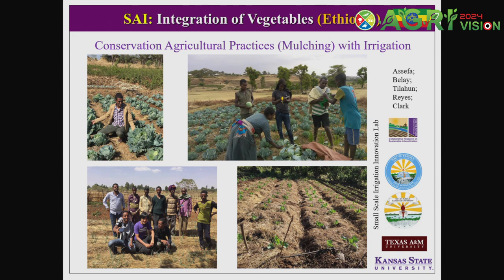Another approach is watershed management — collecting water in ponds and integrating vegetables in the homeyard, providing irrigation through drip irrigation and conservation agriculture. The three principles of conservation agriculture are: continuous soil cover, no-till, and rotations or diversification. We use locally available mulch on the soil and irrigate through drip irrigation systems to minimize water loss. There is also minimum tillage to remove weeds. I should acknowledge that the people who did this work and collaborating organizations are shown in the slide logos.